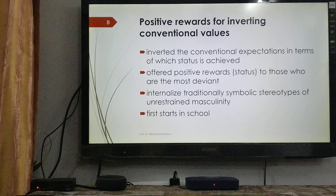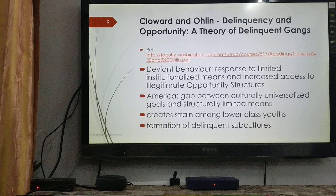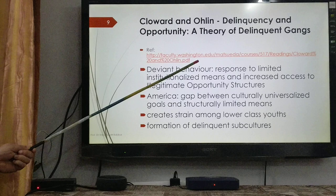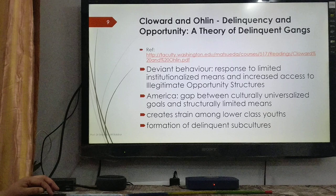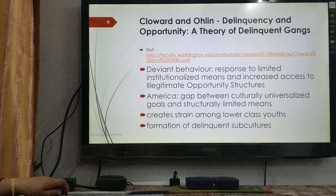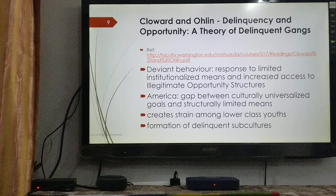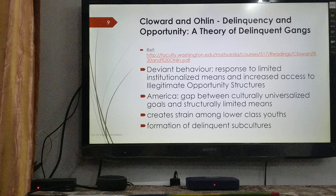We move on to the second thinker, Richard Cloward and Lloyd Ohlin, and their work Delinquency and Opportunity: A Theory of Delinquent Gangs. The reference for this is a link from Washington University. Cloward and Ohlin further elaborated on Merton's strain theory, saying that deviant behavior — and crime in particular — was not just a response to limited institutionalized means of success as proposed by Merton's strain theory, but was also a result of increased access to illegitimate opportunity structures.